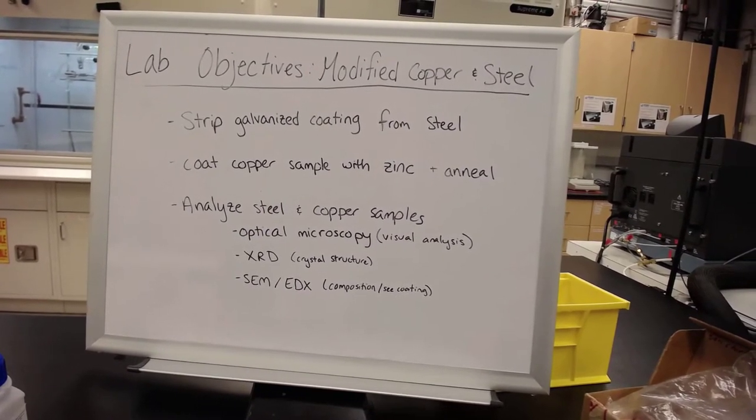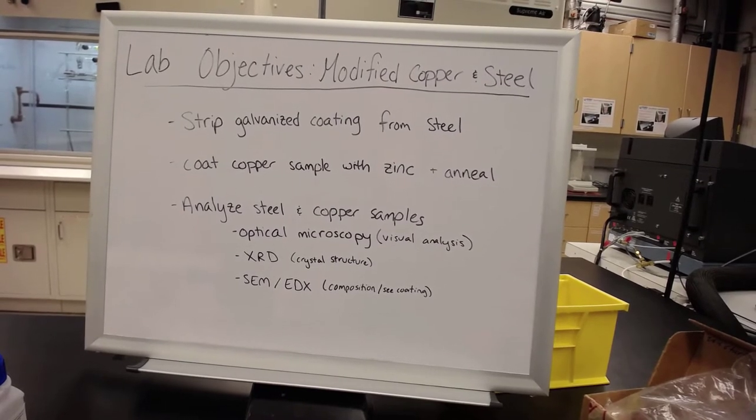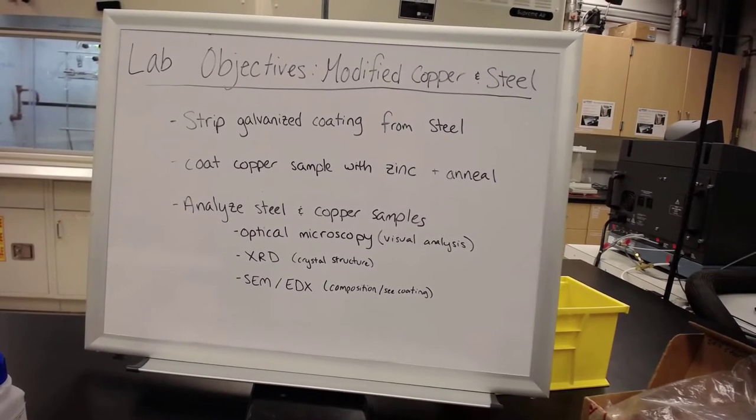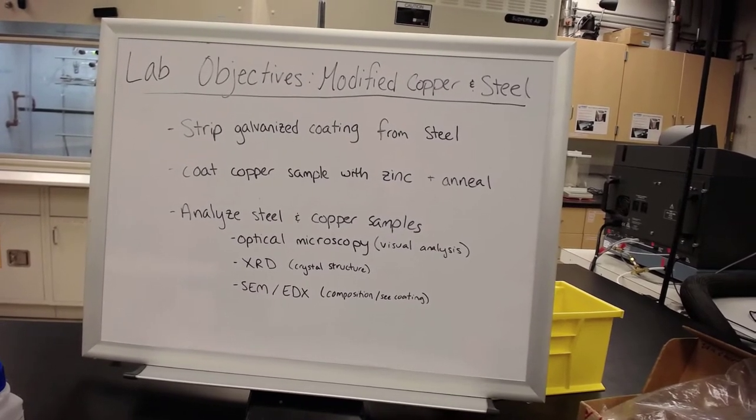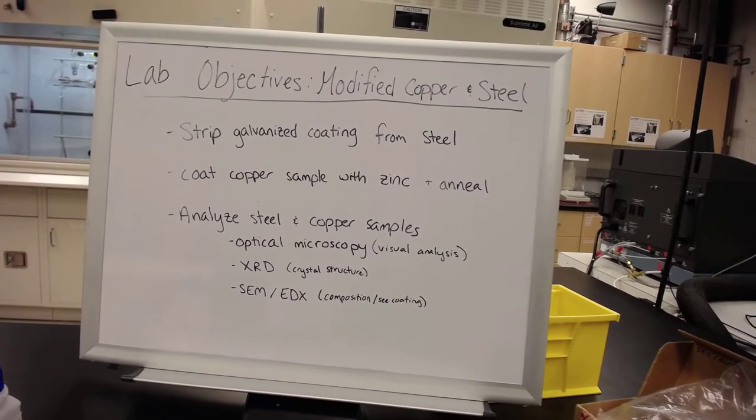Today we're going to explore that further by stripping a galvanized coating from a steel sample, and we'll be able to see how thick that coating was.